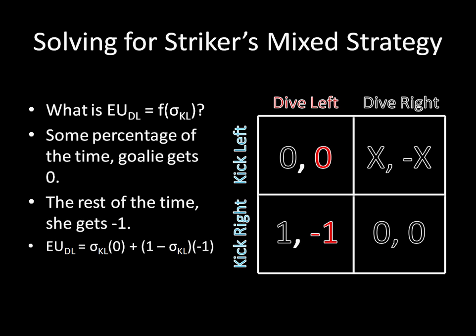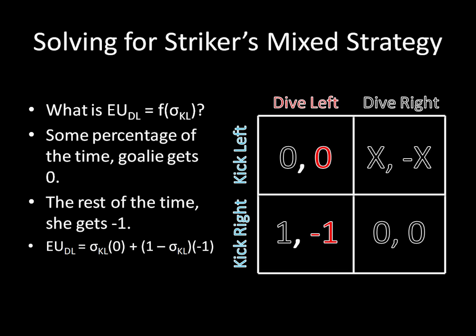Let's start by looking for the striker's mixed strategy. We're looking for a probability of the striker kicking left — call it sigma_kl — that will make the goalie indifferent between diving left and diving right. The expected utility for the goalie of diving left is: with probability sigma_kl the striker kicks left and she stops it, getting zero; the rest of the time, with probability (1 - sigma_kl), the striker kicks right and she gets negative one. So her expected utility of diving left is sigma_kl times zero plus (1 - sigma_kl) times negative one.